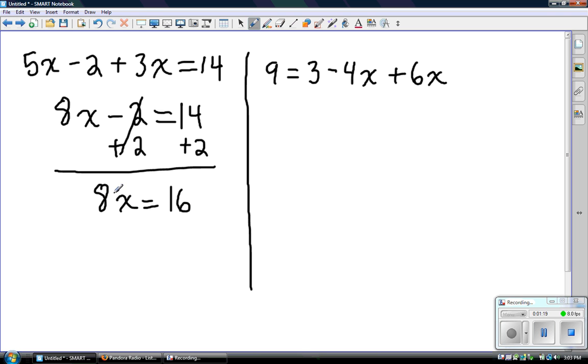And lastly, since we have 8 times x equals 16, we're going to do the opposite operation. The opposite of multiplying by 8 is dividing by 8. So we divide both sides of the equation by 8 in order to get x by itself, and we get x equals 2.